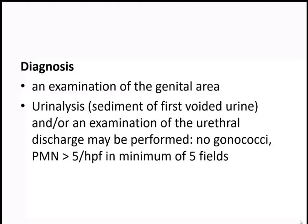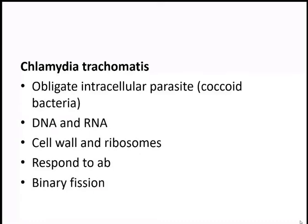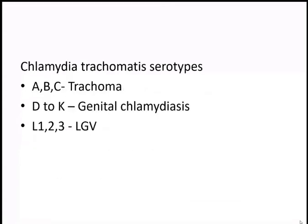If we do not see Neisseria gonorrhoeae on the smear, we suspect non-gonococcal causes and investigate accordingly. The most common causative agent is chlamydia trachomatis, which is considered an obligate intracellular parasite. It has features of bacteria — it has both DNA and RNA, a cell wall, and ribosomes — responds to antibiotics, and divides by binary fission. The strain causing non-gonococcal urethritis is D to K; strains A, B, C cause trachoma, and L1, L2, L3 cause lymphogranuloma venereum.